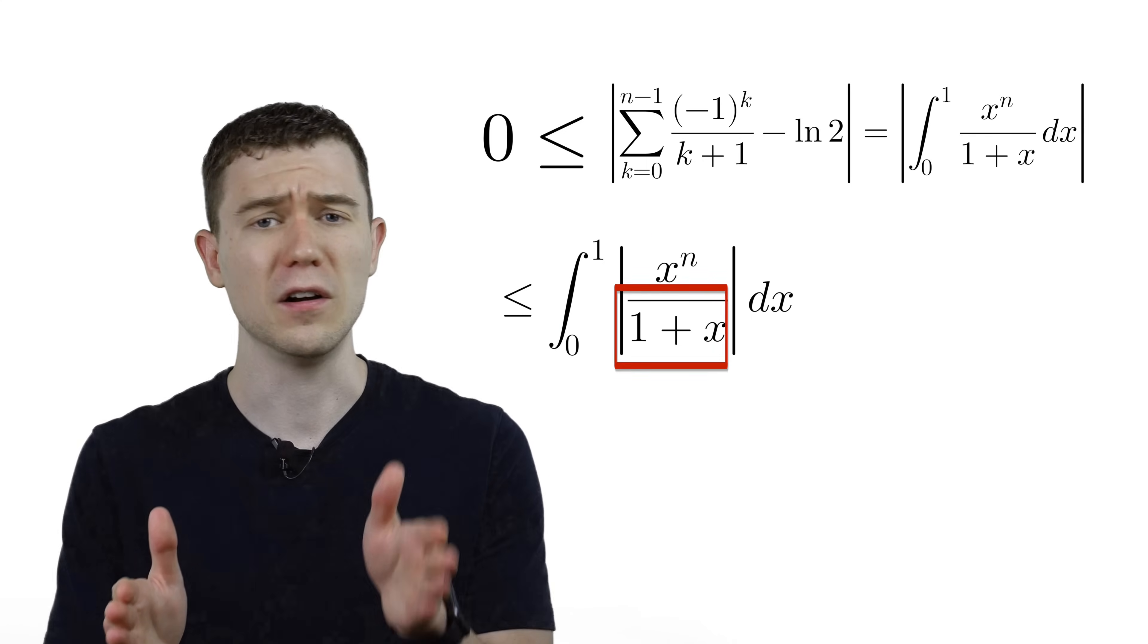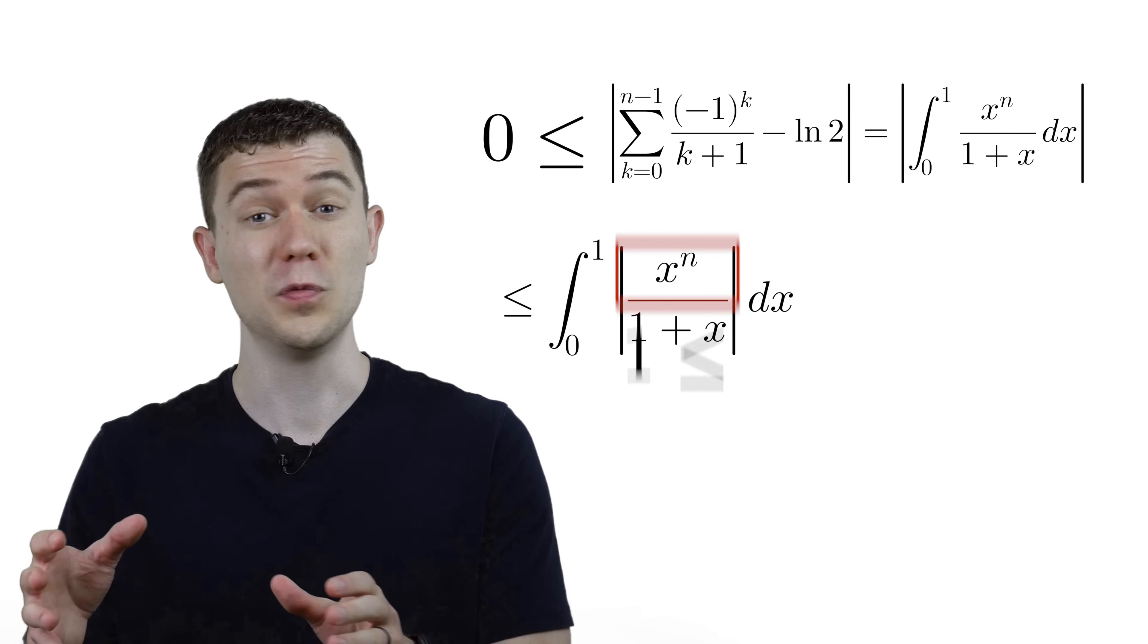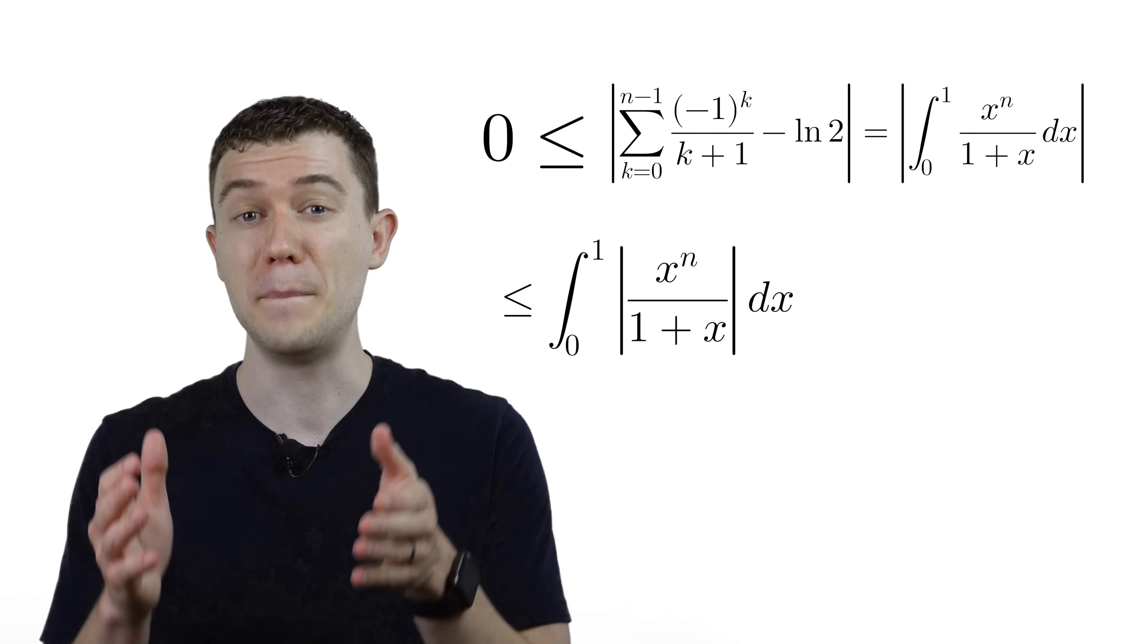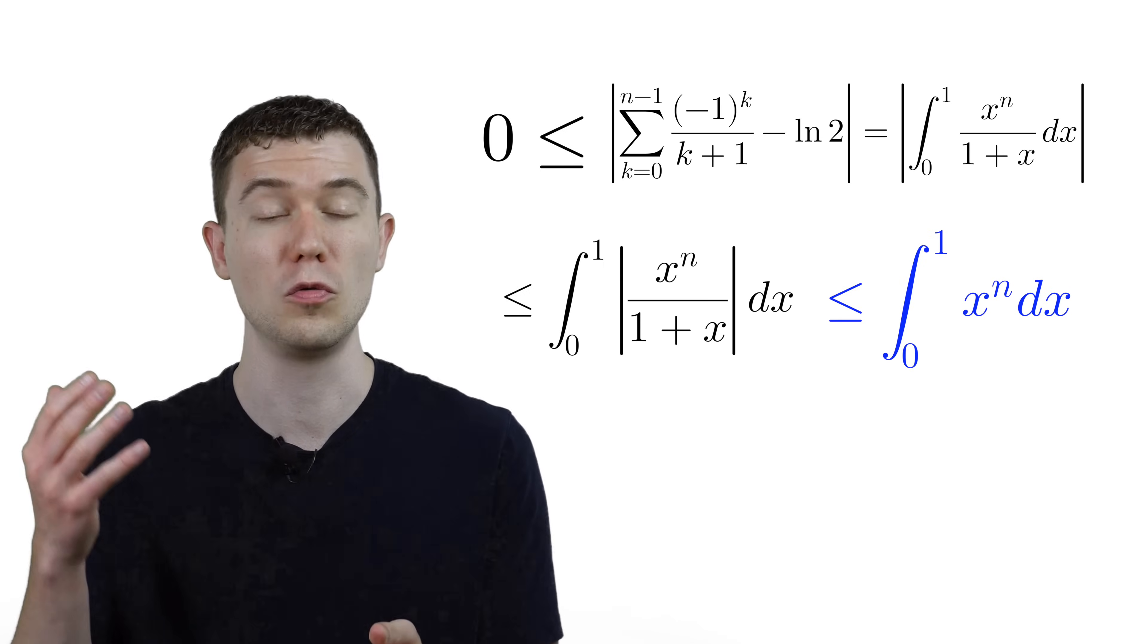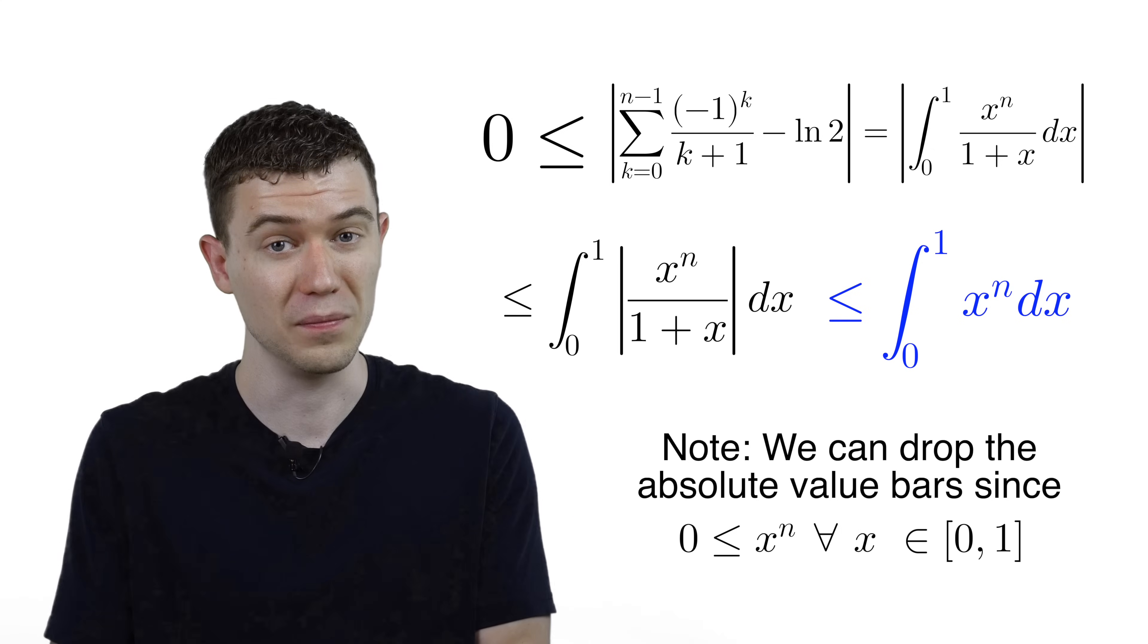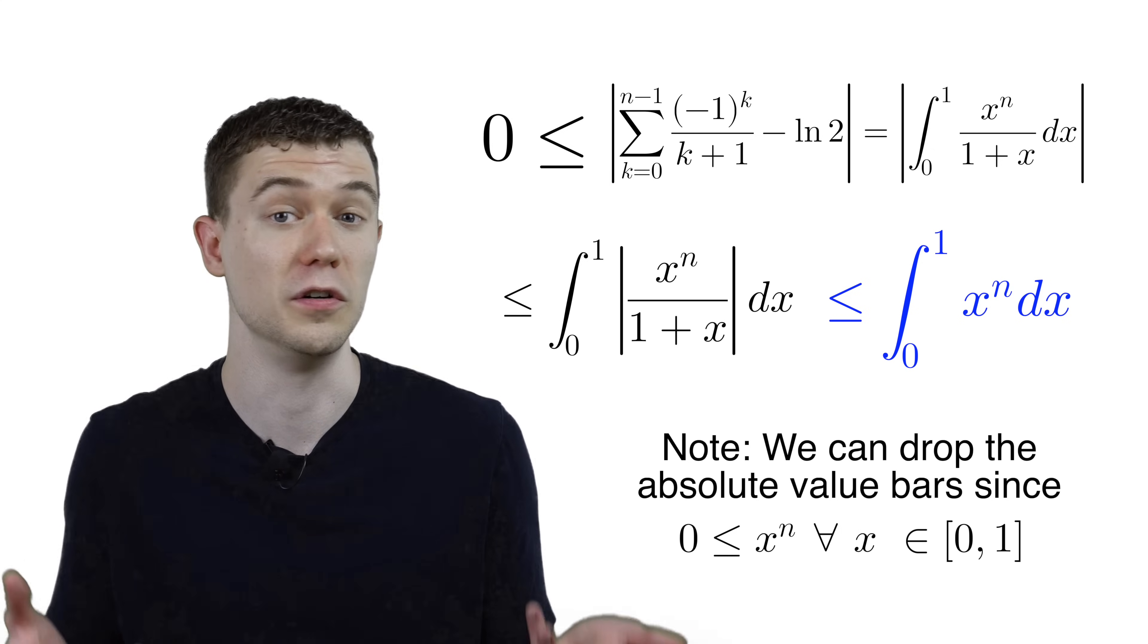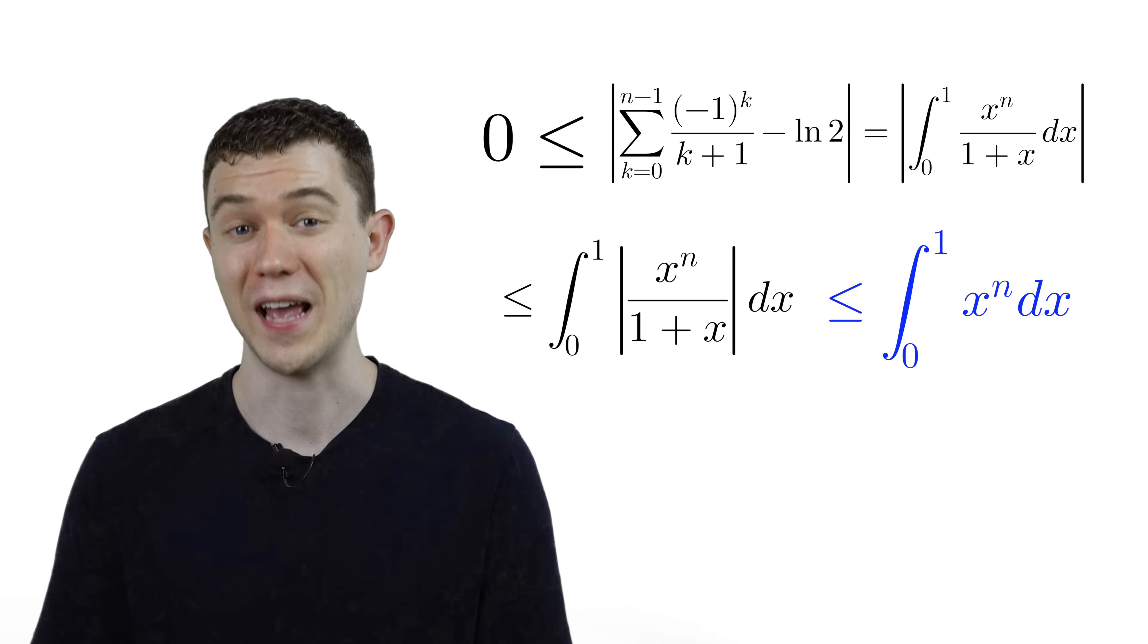that denominator, x plus 1, is always going to be larger than 1. So if we just removed it, if we compared it to the definite integral without that denominator, this inequality is always true. Essentially, we're just dividing by less, so the quantity should be bigger. And this integral we can compute.